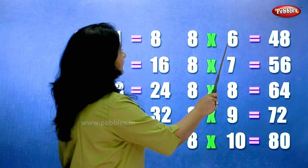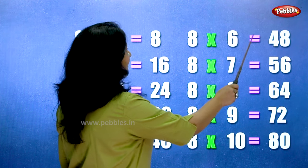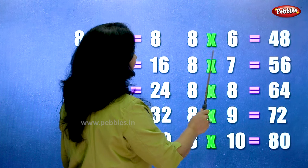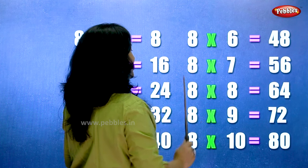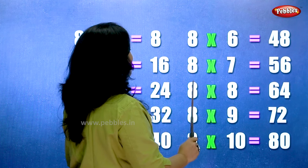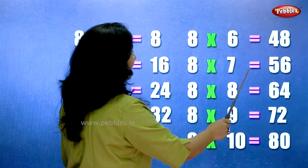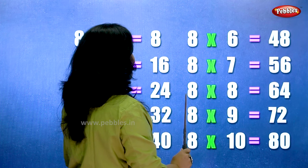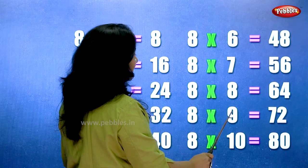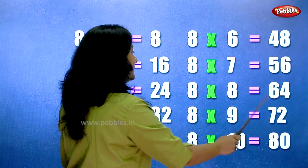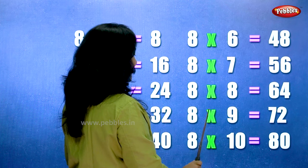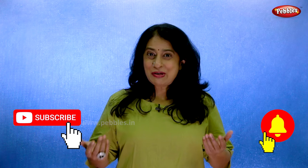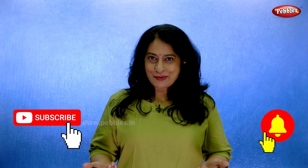8 6s are 48. 8 7s are 56. 8 8s are 64. 8 9s are 72. 8 10s are 80. Thank you for watching the video.